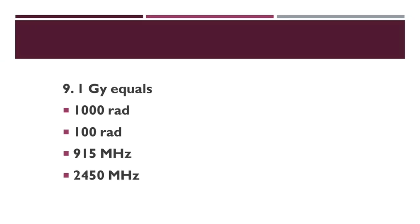One gray is equal to — Option A: 1000 rad. Option B: 100 rad. Option C: 915 megahertz. Option D: 2450 megahertz. Correct answer: 1 gray is equal to 100 rad.